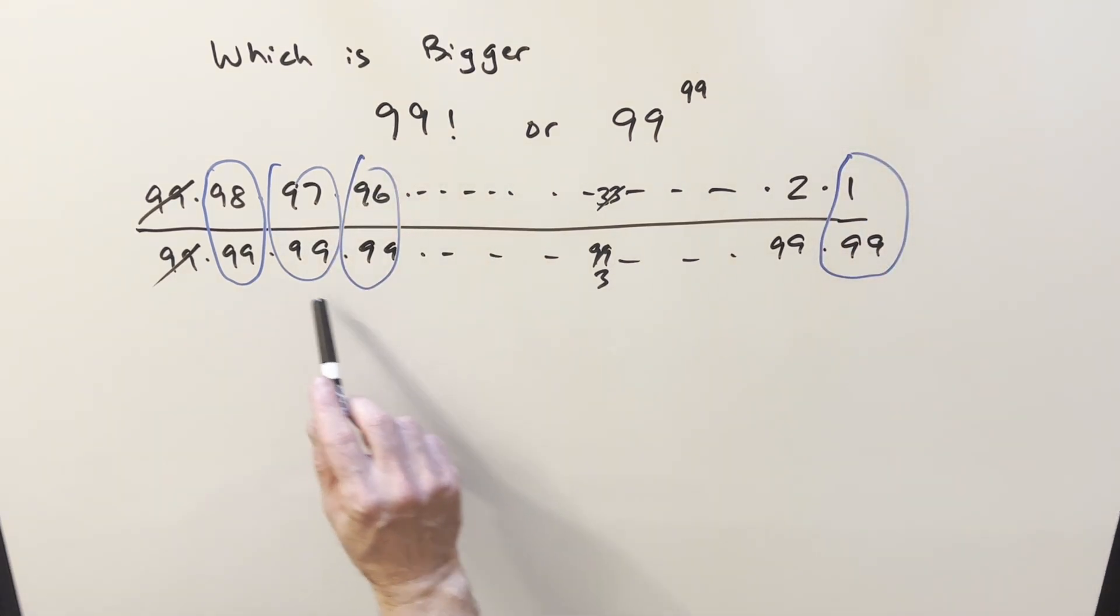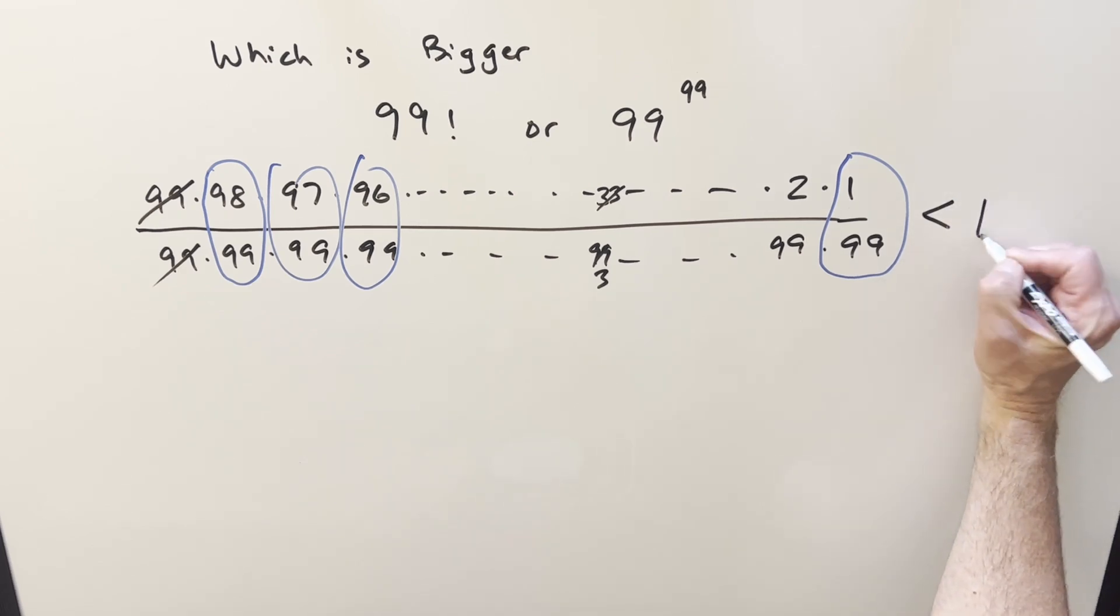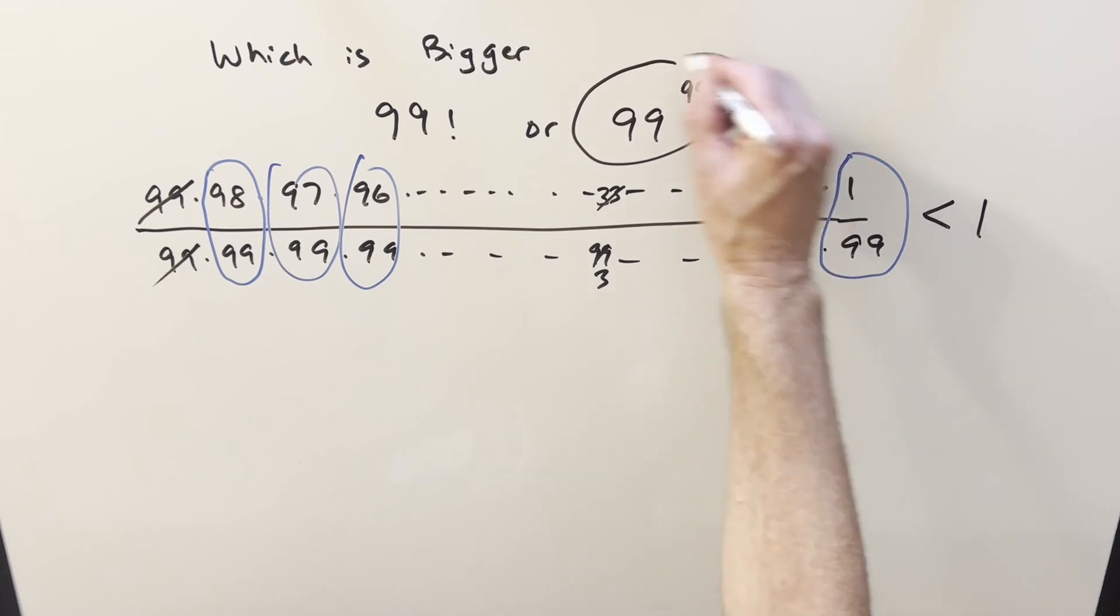So what's going to happen if every term in the denominator is bigger and we've got the same number of terms, or you look at it as we're multiplying together a bunch of terms that are all less than 1, this here is definitely less than 1. And if this thing is less than 1 we can say that 99 to the 99 is definitely bigger than 99 factorial.